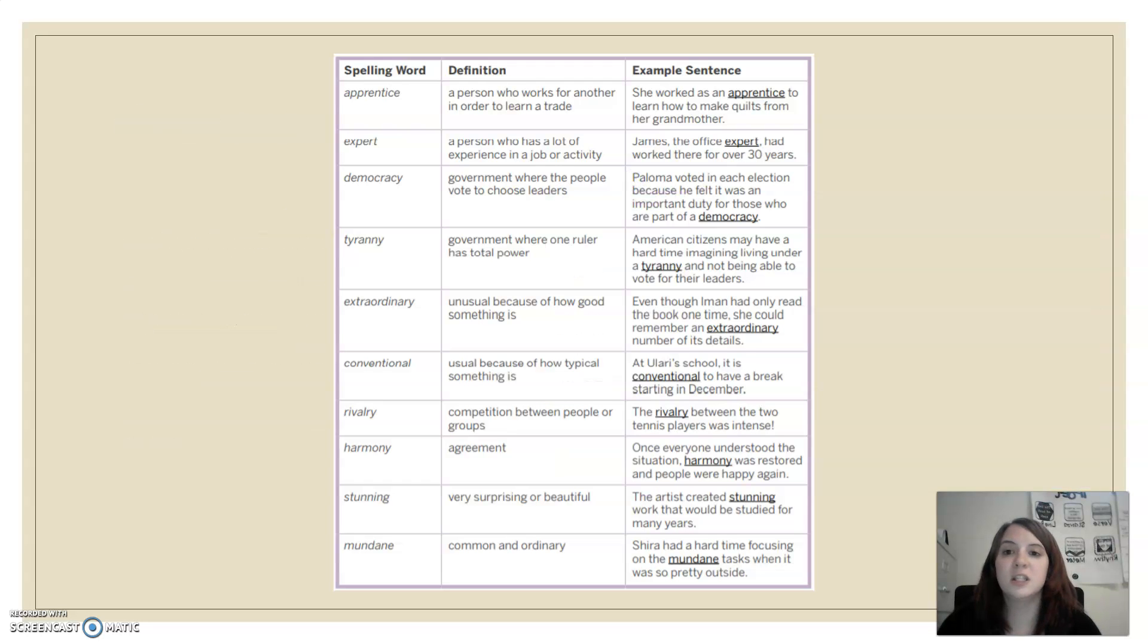These are our spelling words. Remember, we're not specifically giving out a spelling test, but it's still really good to have these familiar. So we have apprentice, expert, democracy, tyranny, extraordinary, conventional, rivalry, harmony, stunning, and mundane.